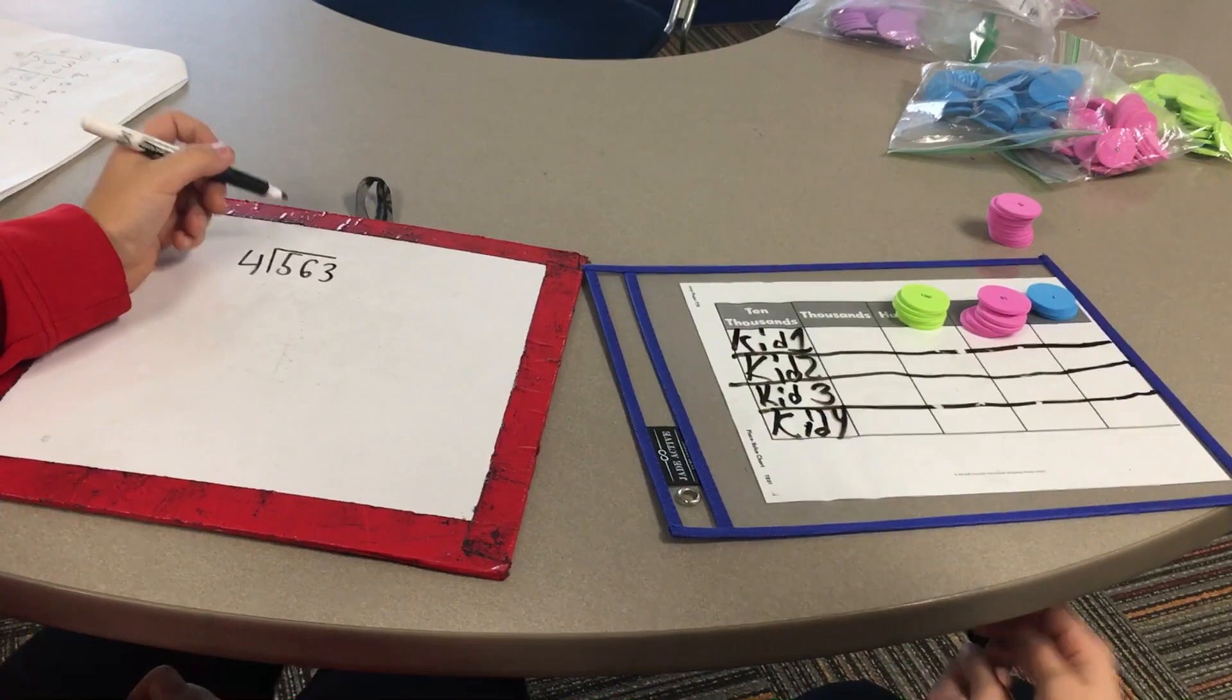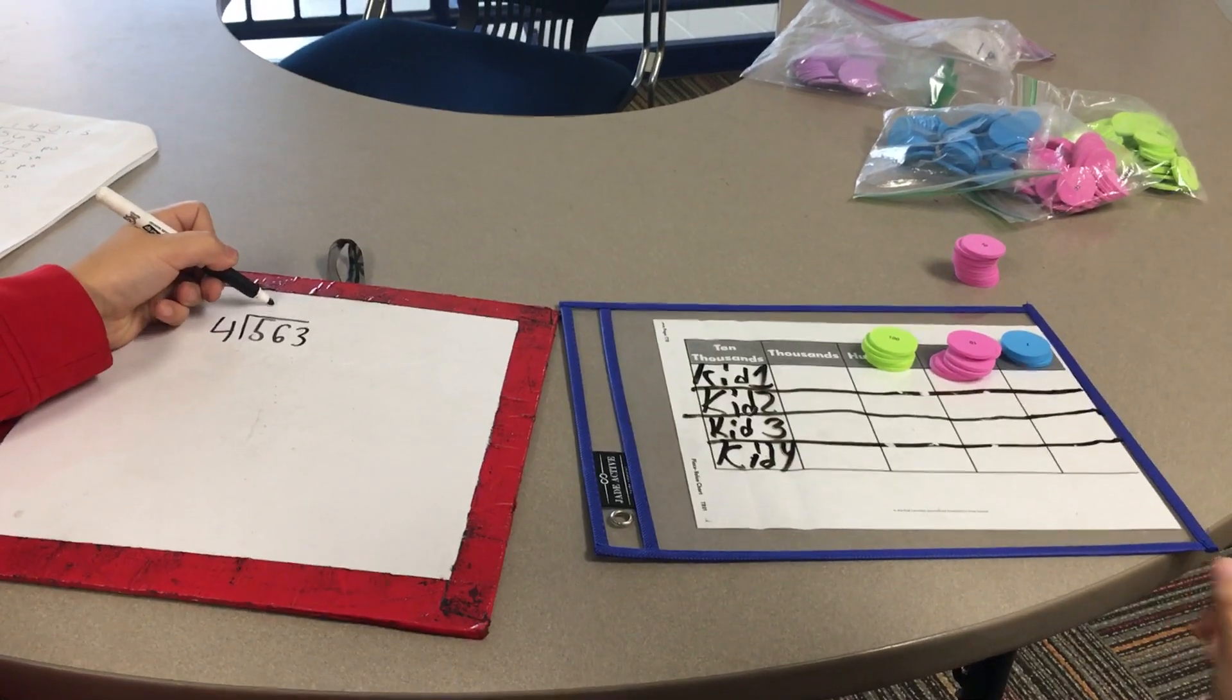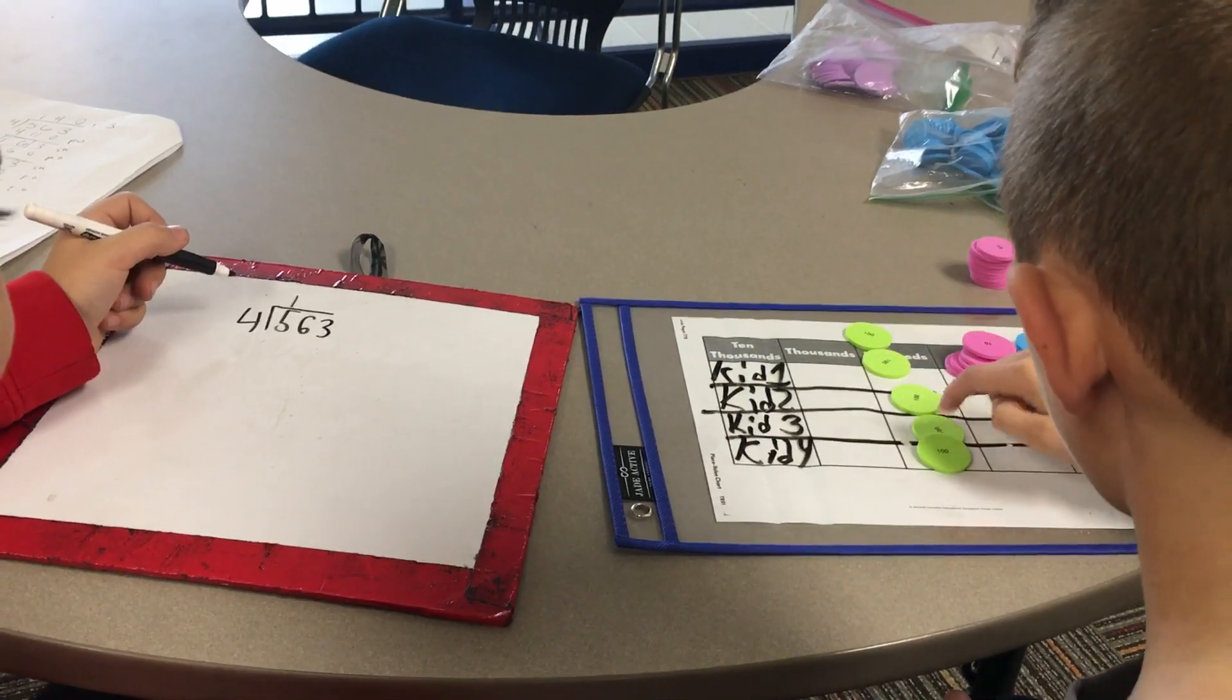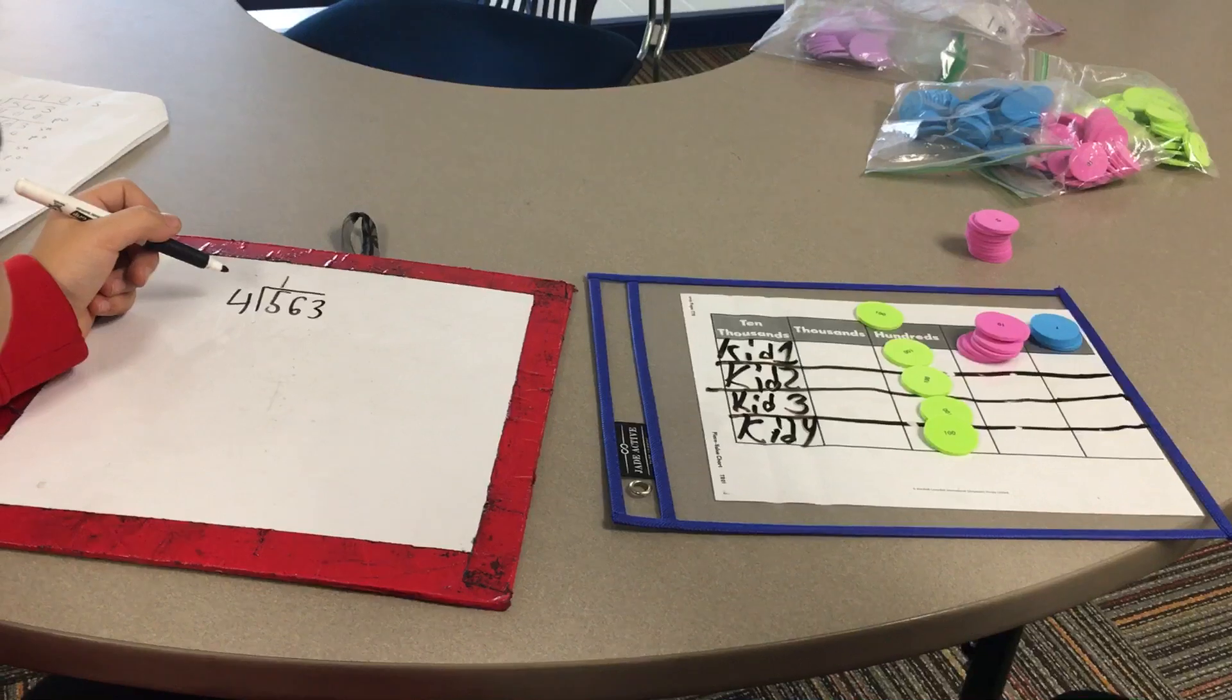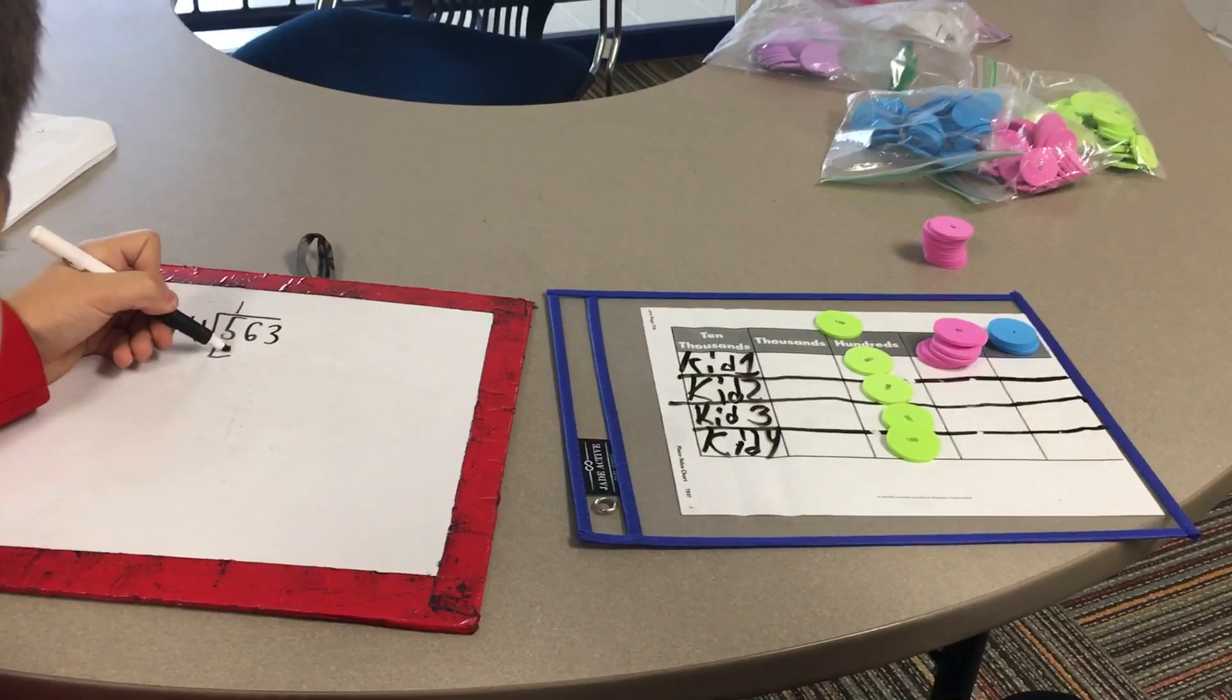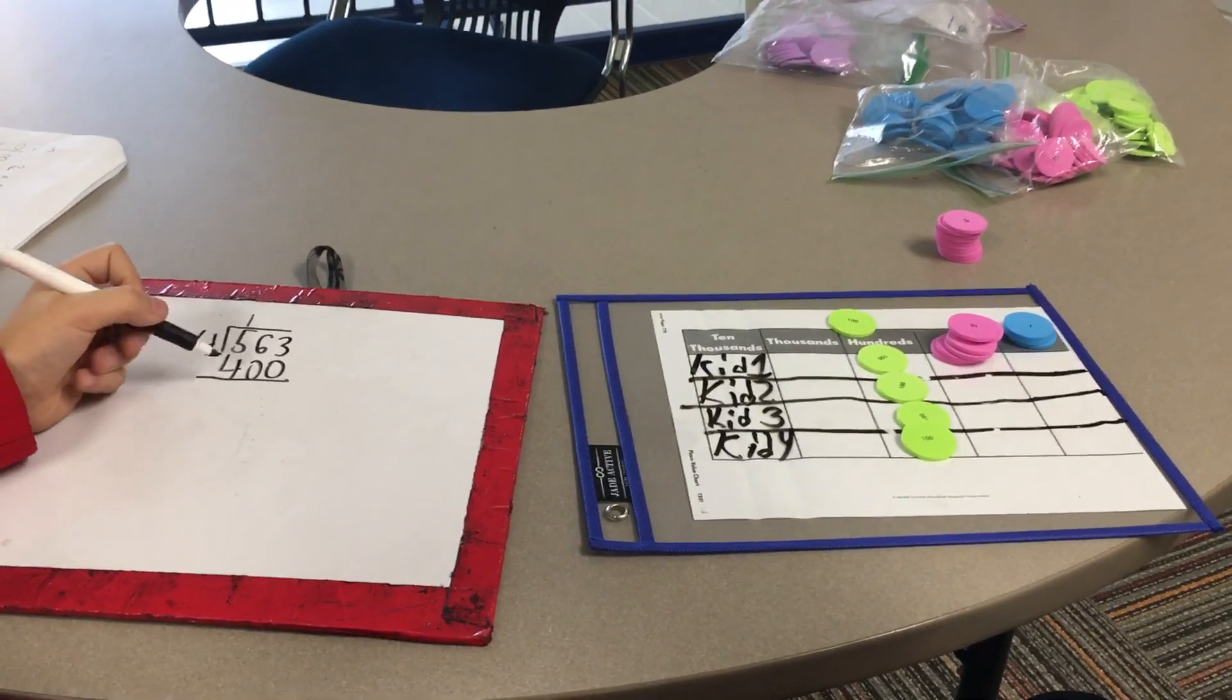First, look at the 100 chips. There are 500 chips and 4 kids, so there's enough for each kid to get 100 chips. You write a 1 on the top. Since we gave each kid 100 and there are four kids, we passed out a total of 400 pieces of candy. Now you subtract to show how much candy still needs to be passed out.